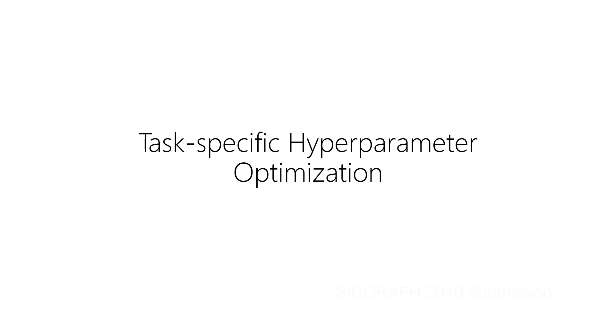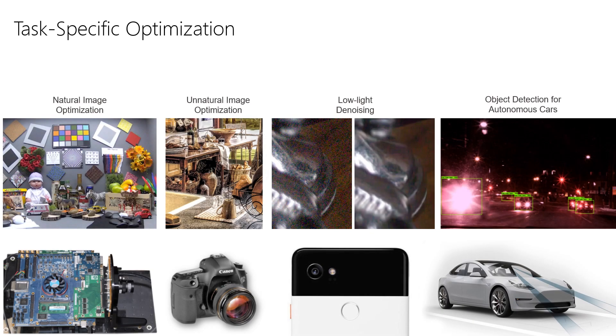We apply our proxy model to various different imaging applications and show state-of-the-art results in each of them by optimizing hyperparameters. We demonstrate optimization for several different ISPs. For example, ISPs that accurately recover natural images, ISPs that are tuned to produce deliberately unnatural images, ISPs that outperform the state-of-the-art in low-light imaging, and ISPs that are optimized for object detection.